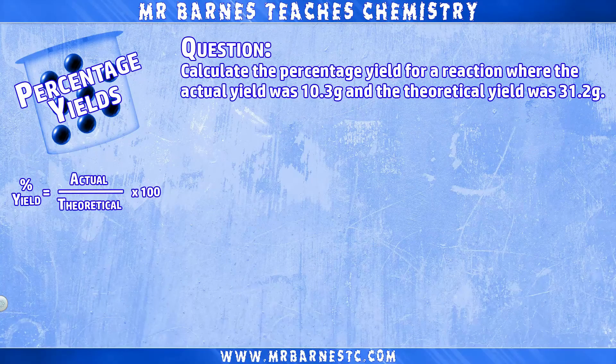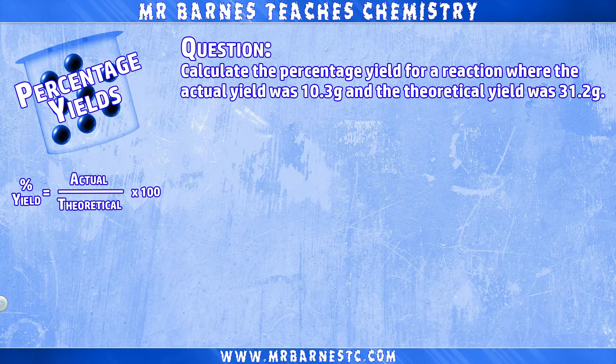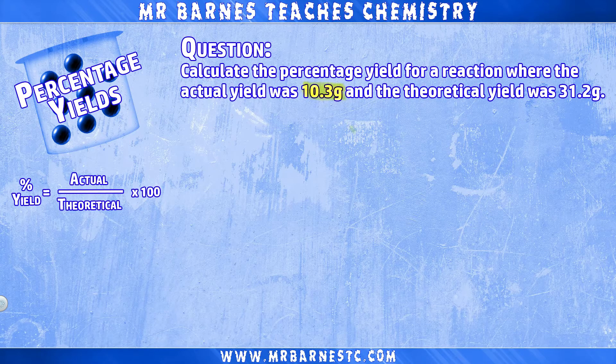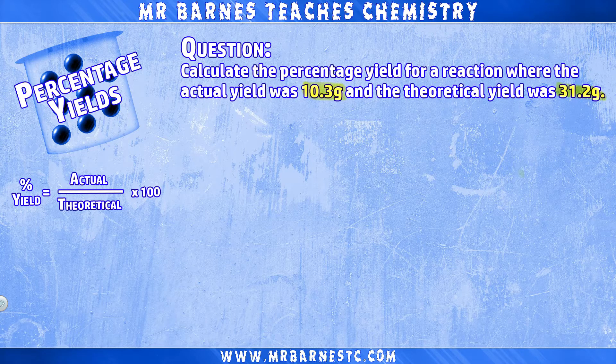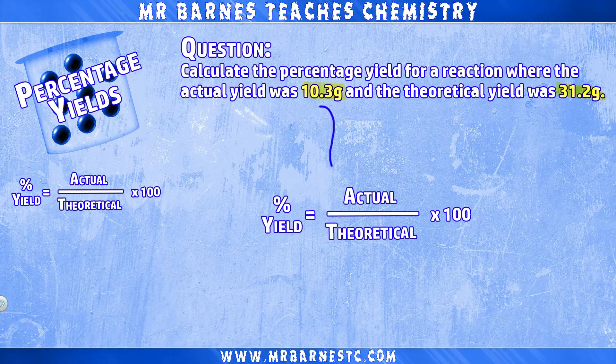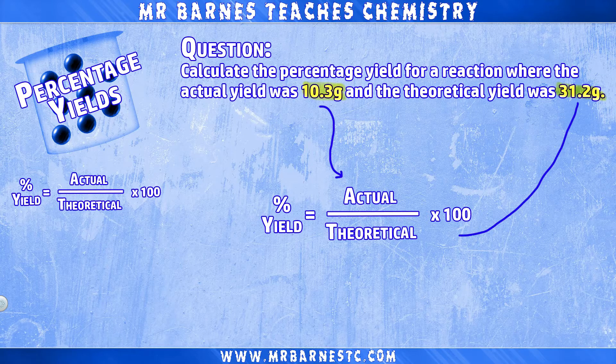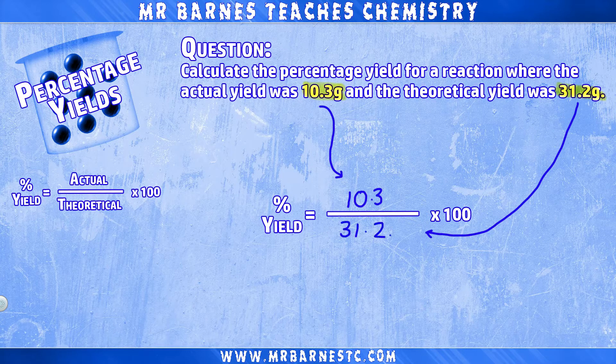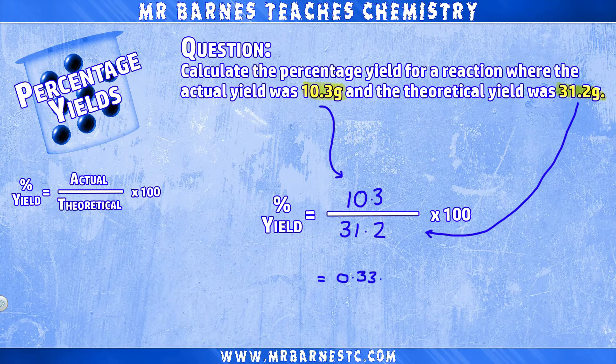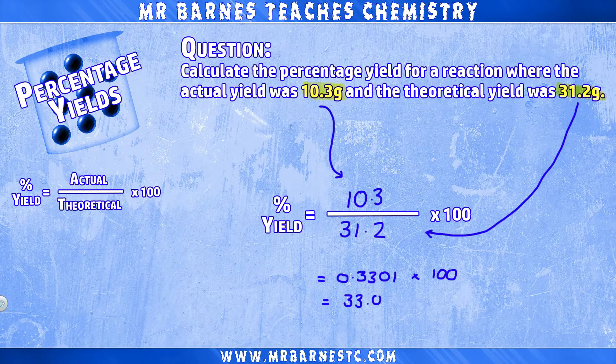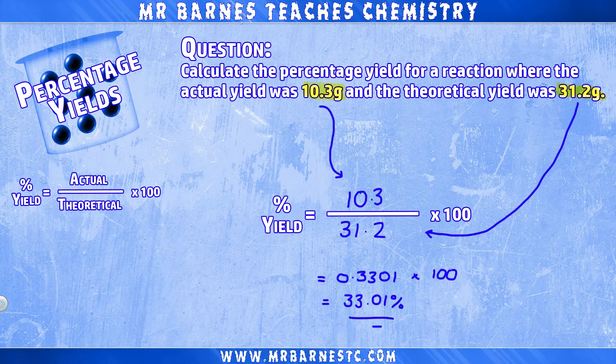So if we look at this in action, I have a question that says to calculate the percentage yield for a reaction where the actual yield was 10.3g and the theoretical yield was 31.2g. So the question has given us both the actual yield and the theoretical yield. It's just a case of adding it to the equation. 10.3 is the actual yield, 31.2 is the theoretical yield, so 10.3 divided by 31.2, which is 0.3301, which we then multiply by 100, giving us an answer of 33.01% to two decimal places.